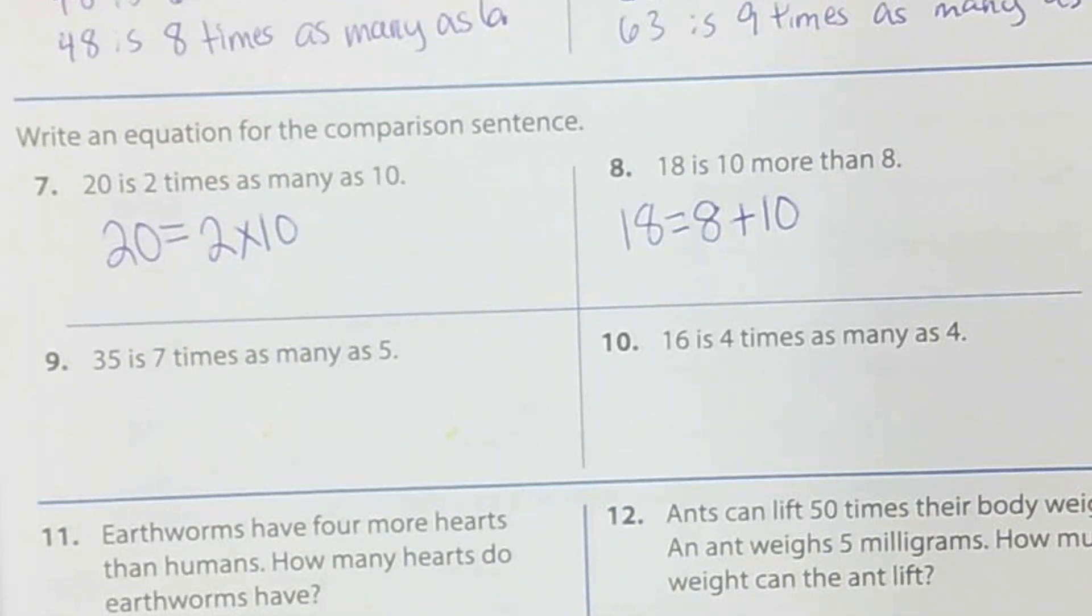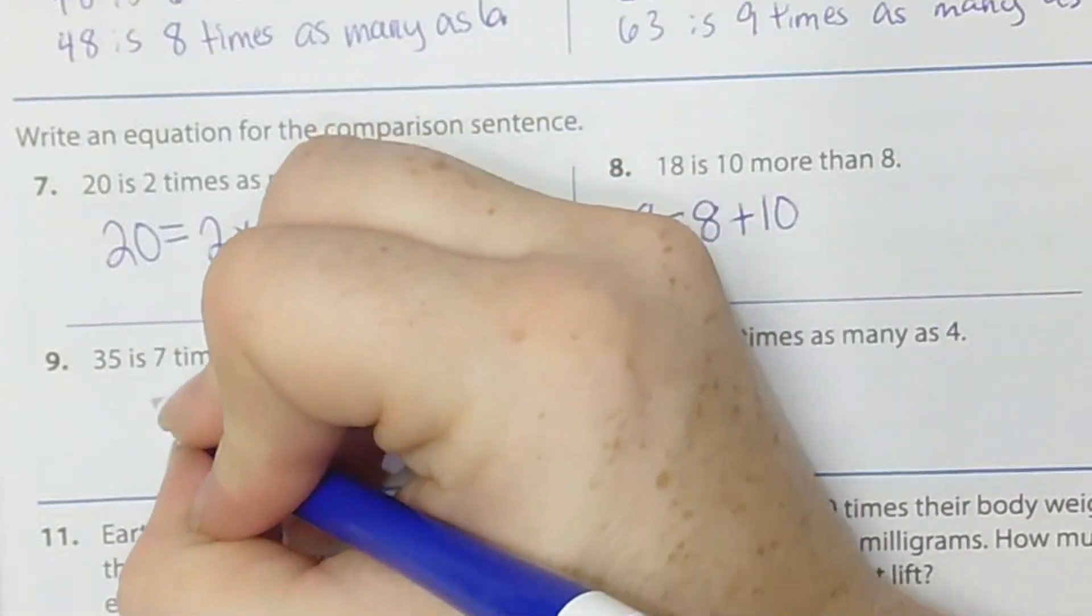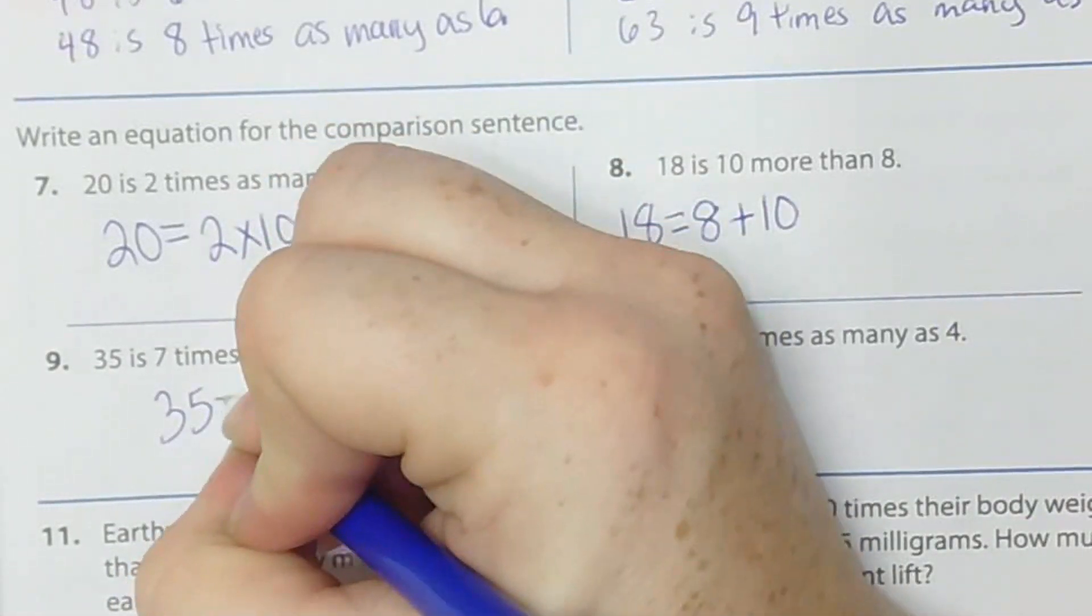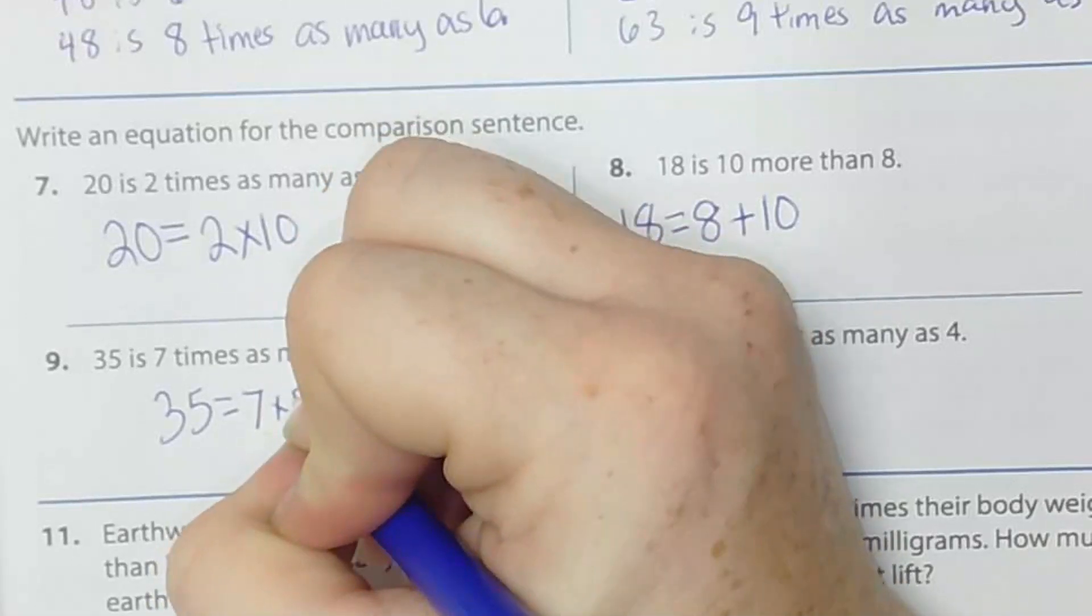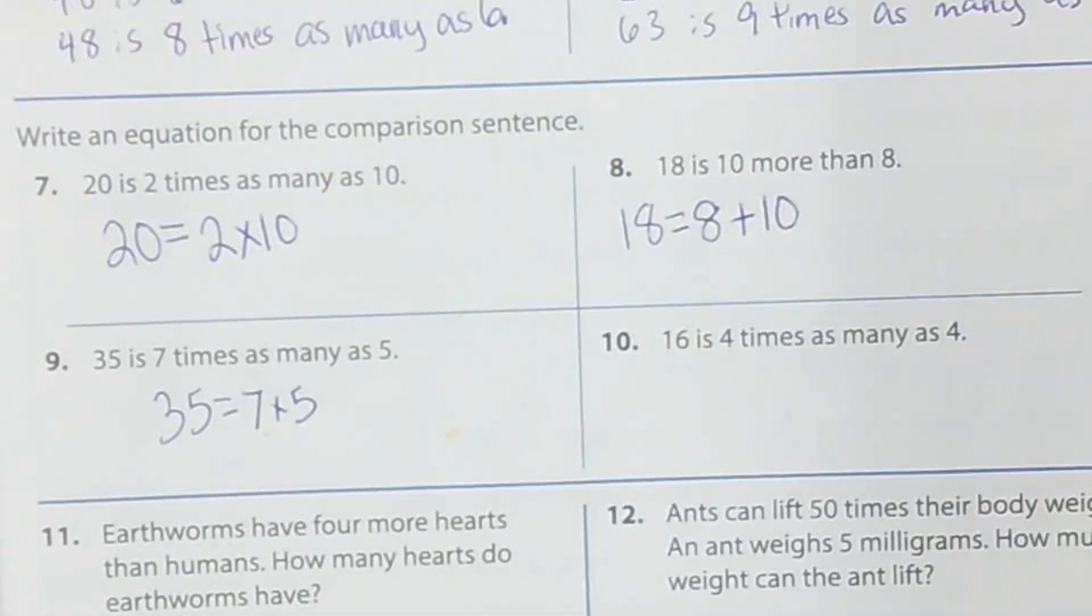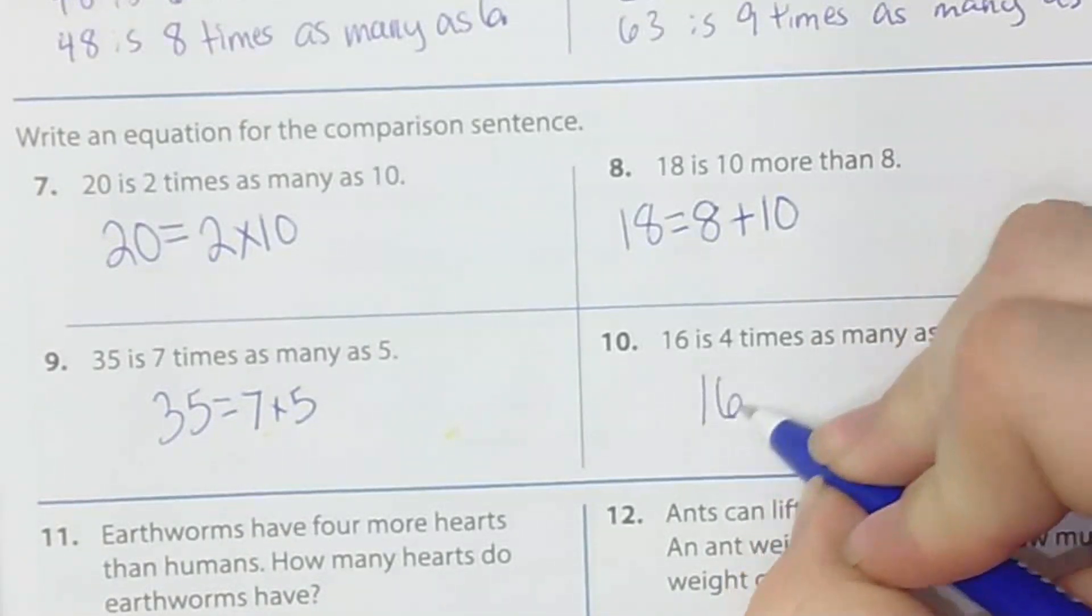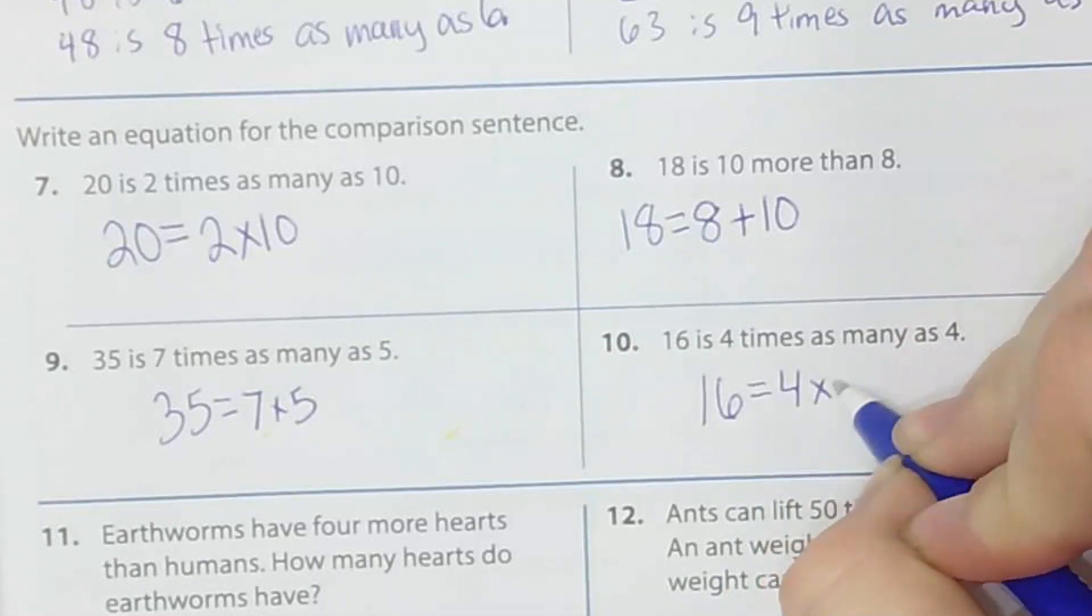Number 9, 35 is 7 times as many as 5. So, I'm going to write 35 equals 7 times 5. 16 is 4 times as many as 4. So, I'm going to write 16 equals 4 times 4.